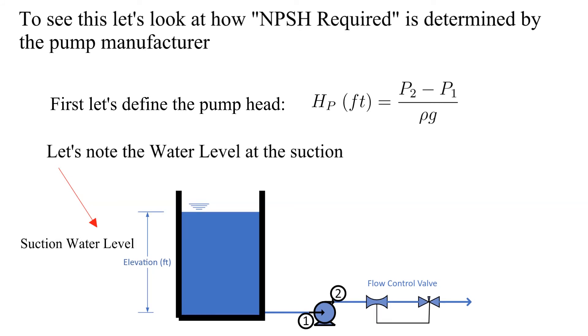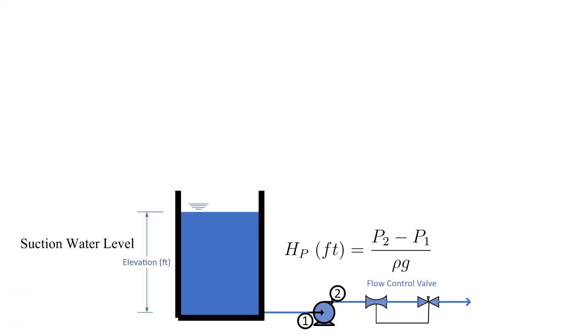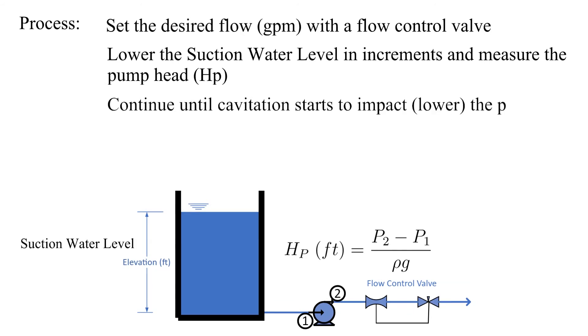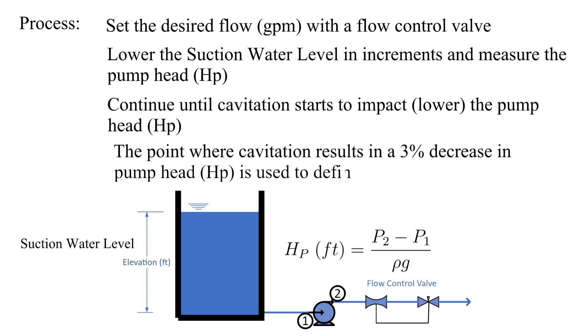A decrease in pump head indicates sufficient cavitation to degrade pump performance. Let's review the process. First we set the desired flow with the flow control valve. Then we lower the level in the tank in increments and measure pump head. We continue until cavitation starts to impact the pump head. The point where cavitation results in a three percent decrease in pump head is used to define net positive suction head required.